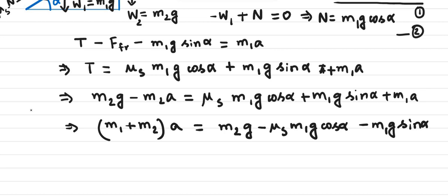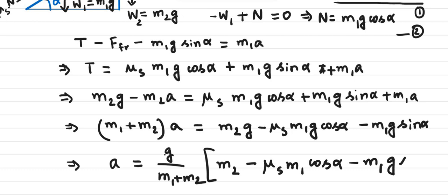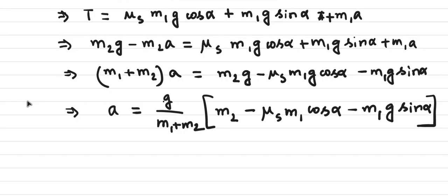We can factor out G from everyone, and then the acceleration becomes G over M1 plus M2. And inside, we have M2 minus Mu S M1 cosine alpha minus M1G sine alpha. In order for the acceleration to be non-zero or slightly over zero, A needs to be slightly greater than or equal to zero. And the condition it yields for us is M2 has to be greater or equal to Mu S M1 cosine alpha plus M1,